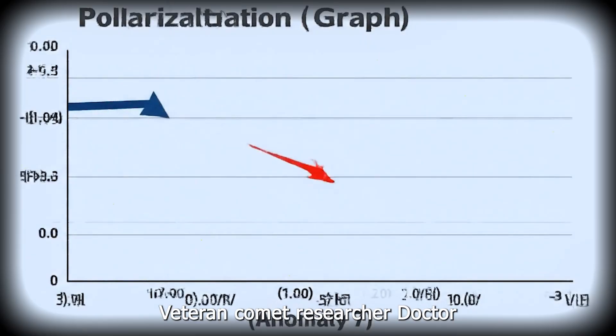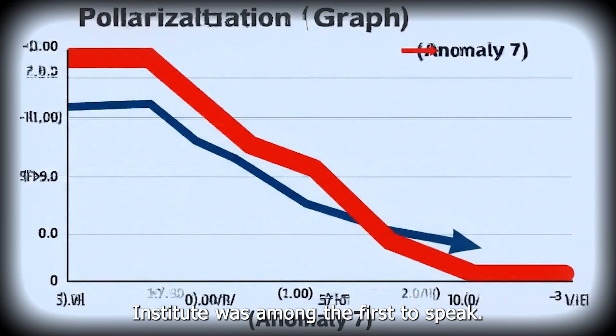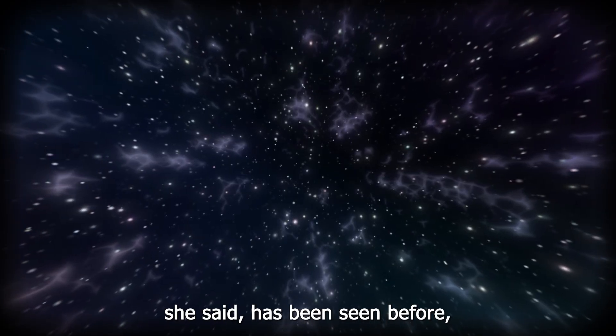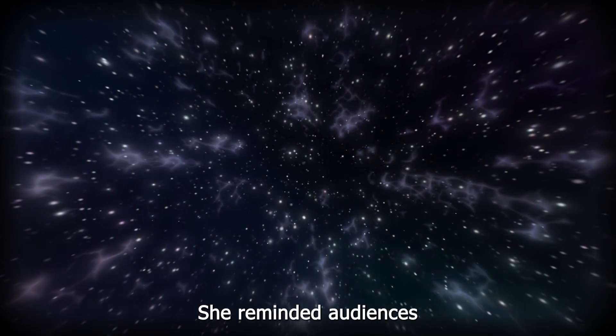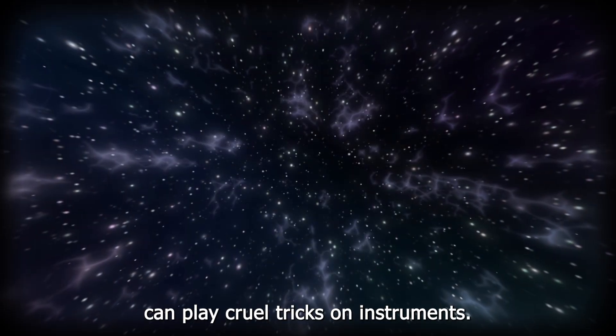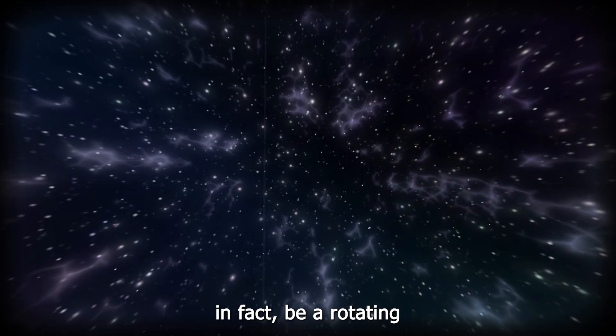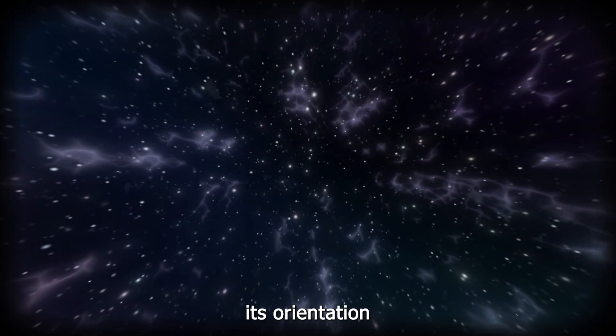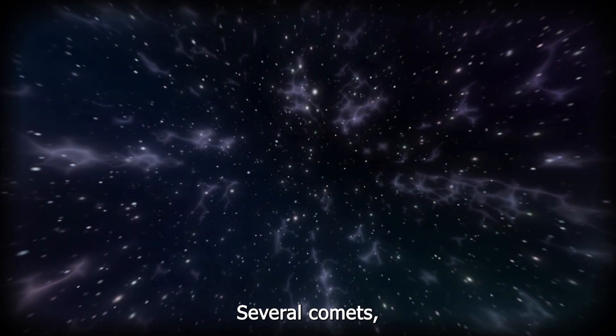Veteran comet researcher Dr. Jessica Agarwal from the Max Planck Institute was among the first to speak. Every feature Loeb lists, she said, has been seen before, just not all at once. She reminded audiences that geometry and sunlight can play cruel tricks on instruments. A plume that appears to jet toward the sun might, in fact, be a rotating vent on a lumpy surface, its orientation only seeming reversed from our vantage point. Several comets, including C 1999-S4 Linear and 67P Churyumov-Gerasimenko, had shown similar illusions when observed under certain lighting angles.